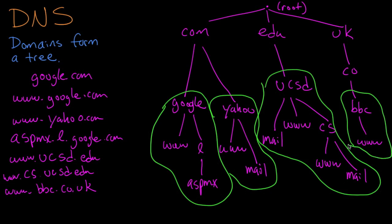Within each one of these green circles, there can be other domains. Here is the cs.ucsd.edu domain. And right here is the l.google.com domain. There are even smaller ones within that. For example, here is the aspmx.l.google.com domain. Here is the mail.yahoo.com domain.